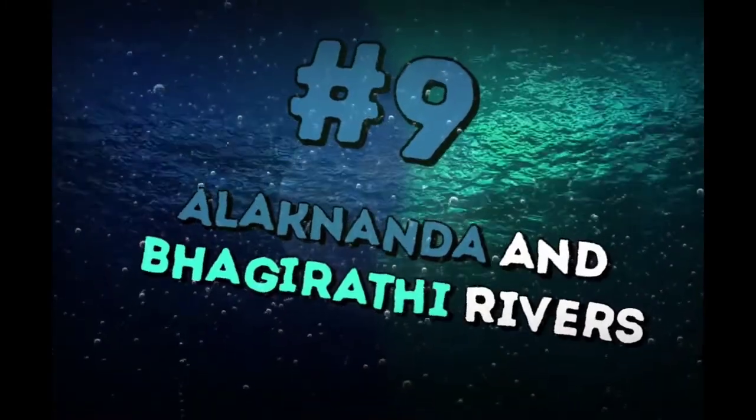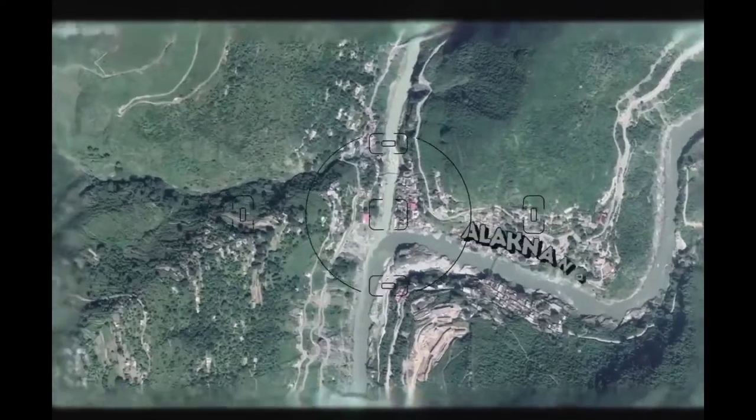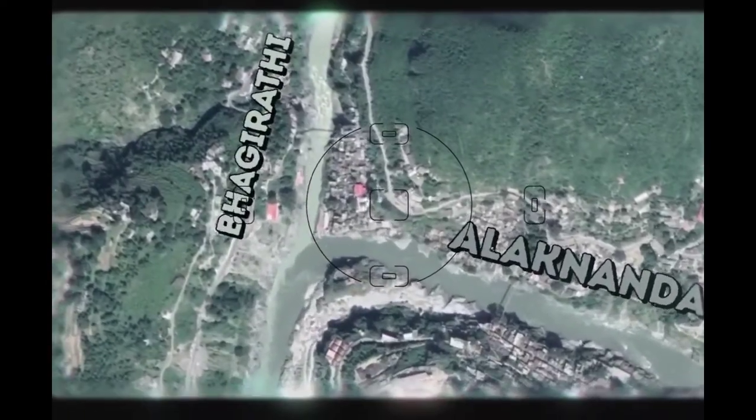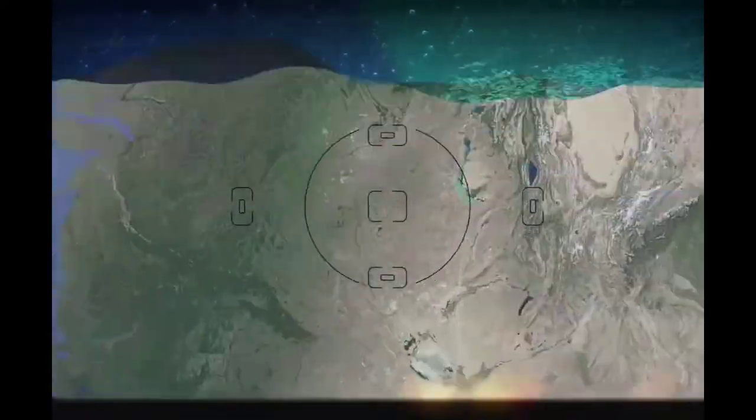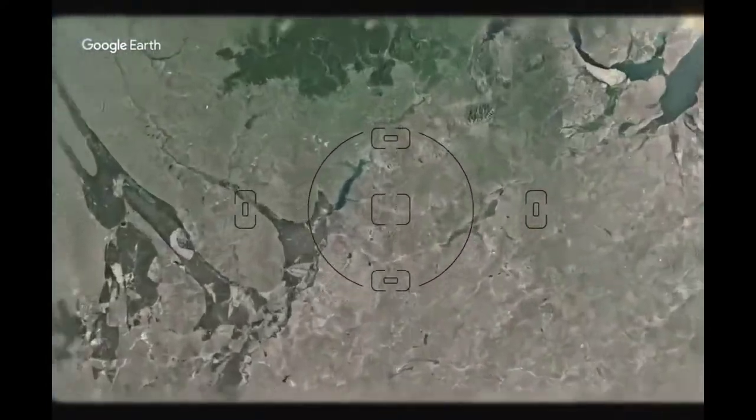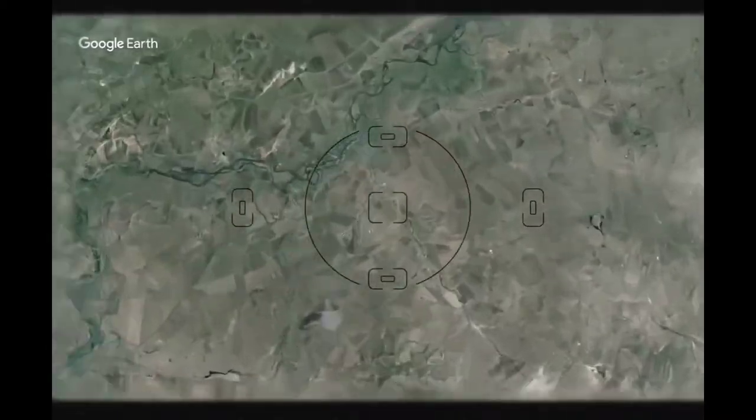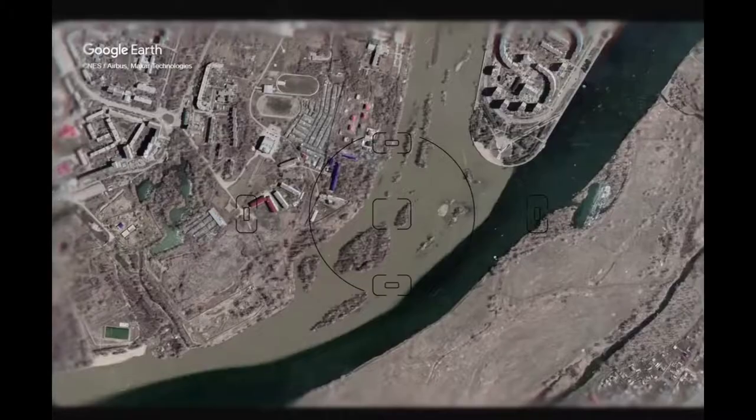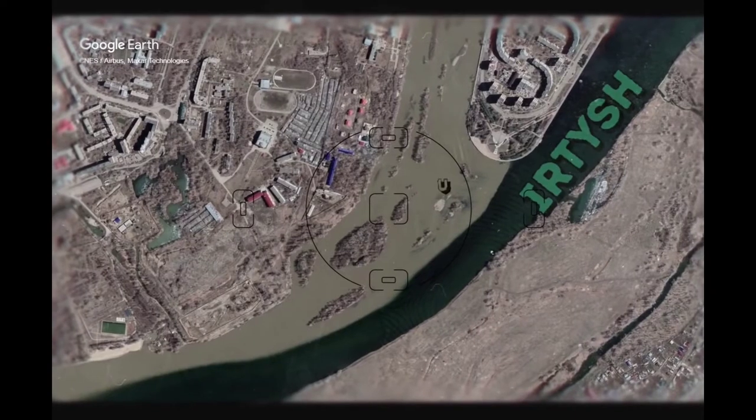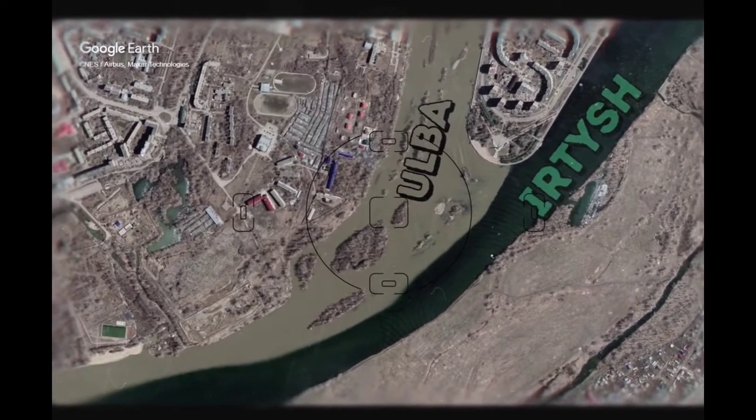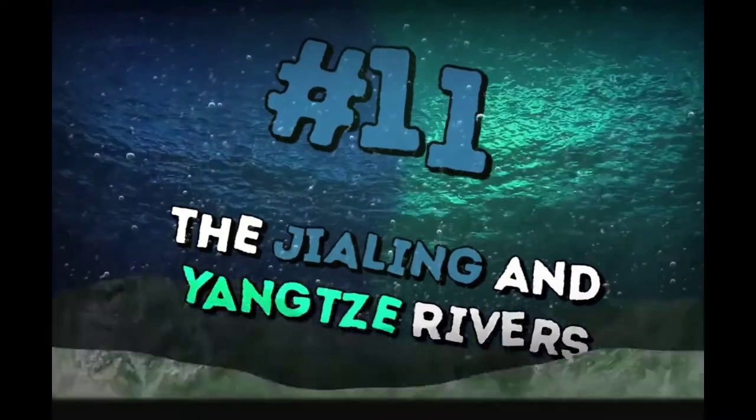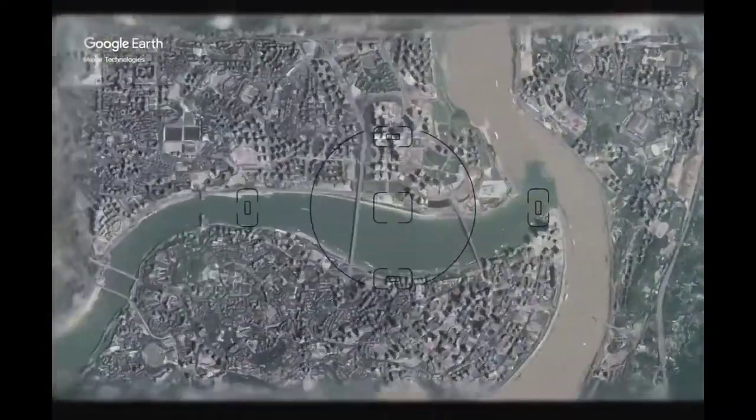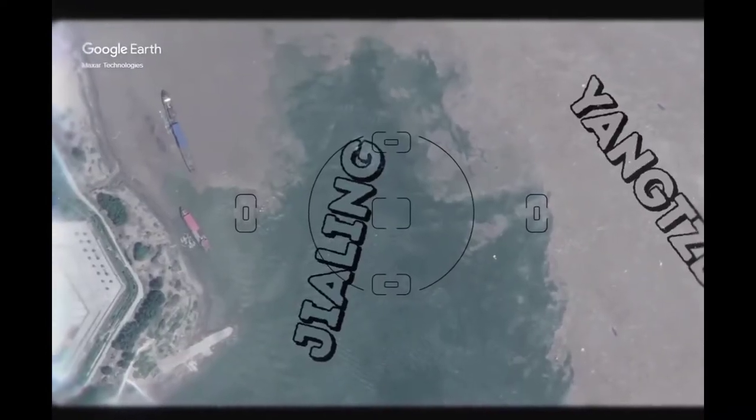Alaknanda and Bhagirathi rivers meet in India. Alaknanda is dark and Bhagirathi is light. Irtysh and Ulba flow into each other in Kazakhstan, near the city whose name you'll never be able to pronounce. The Irtysh has clean water and Ulba cloudy. The Jialing and Yangtze rivers meet in Chongqing, China. The Jialing is clean and the Yangtze is brown.